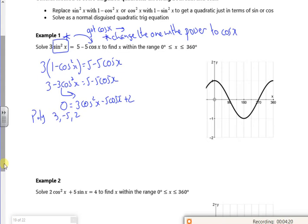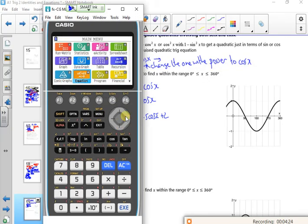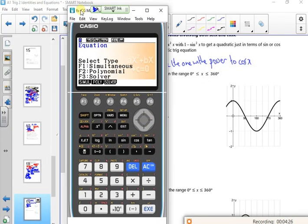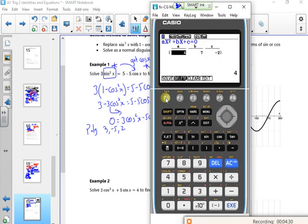So in poly I'm just going to put three minus five two in for poly. So menu, equation, poly, degree two, so three minus five, and two. Gives me a one out and it gives me a two thirds out.